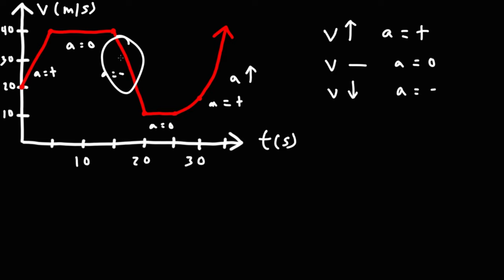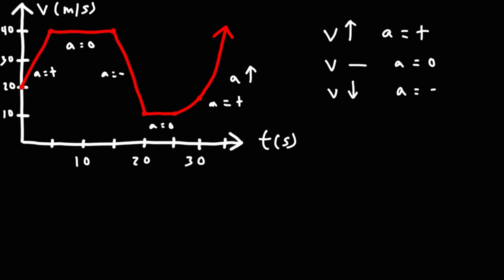Here, the velocity is decreasing at a constant rate. So the acceleration is negative, but the acceleration is constant — it's not decreasing at an accelerating rate. But in the earlier region, because the velocity is increasing at an accelerating rate, the acceleration is not only positive but it's increasing as well, due to that concave up shape.